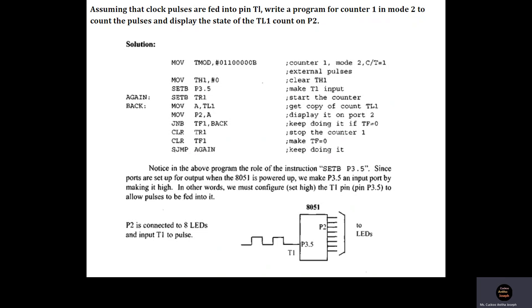So to select mode 2, M1 M0 should be 1 0, and no external start and stop of counter is required here. So the gate bit will be 0. Considering all this, the bit pattern to be moved into TMOD is as shown: it will be 01100000.